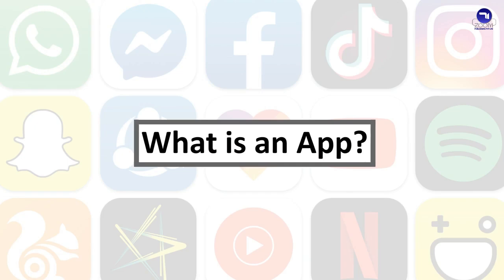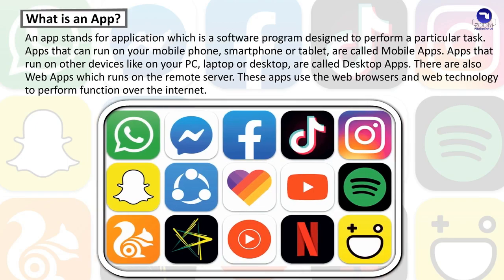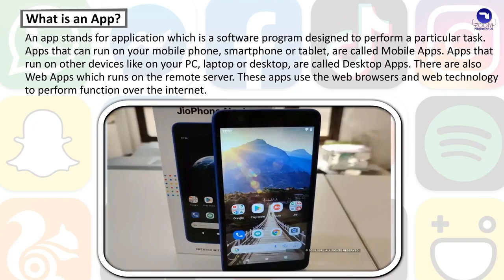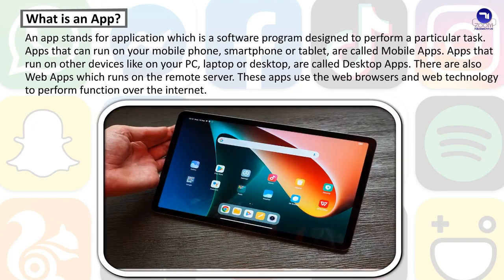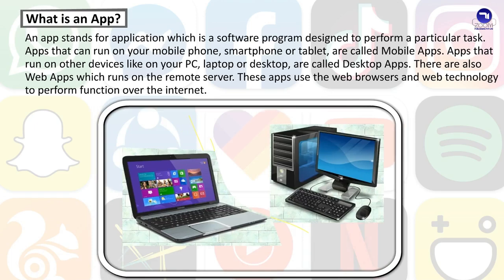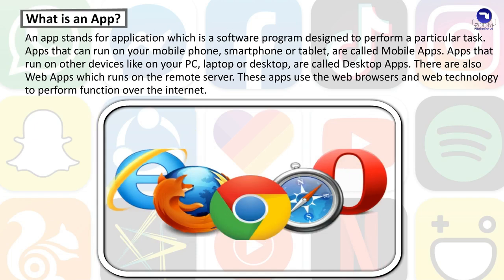What is an app? An app stands for application, which is a software program designed to perform a particular task. Apps that can run on your mobile phone, smartphone, or tablet are called mobile apps. Apps that can run on other devices like a PC, laptop, or desktop are called desktop apps. There are also web apps which run on a remote server and use web browsers and web technology to perform functions over the internet.